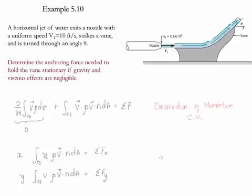Since we are dealing with forces, we need to draw a free body diagram. The forces in this case are the reaction forces. We represent the vane with a point and take both to be positive: the reaction in the x-axis and the reaction in the y-axis. Since gravity and friction are neglected, these are the only two forces in the system, so the summation of forces in x is simply Rx and in y is simply Ry.